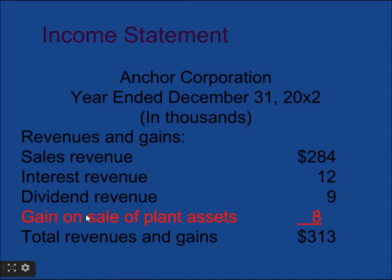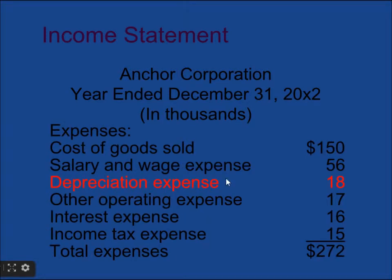From the income statement, the non-cash transaction to adjust in operating activities is the gain on sale of plant asset. Since it is a gain, and for assets we follow increase-decrease or decrease-increase — which means gain is opposite — we have to deduct it from operating activities cash flow. Also, depreciation expense must be added back to net income for operating activities because it is a non-cash transaction.